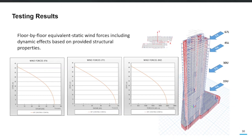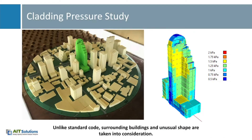Another result from the wind tunnel test is the equivalent static forces — for the x-direction, y-direction, and torsional moment about the vertical z-axis. These three equivalent static forces can be applied to the numerical model for building analysis. They are also commonly compared with building code values to validate or optimize the design decision.